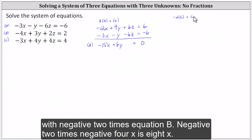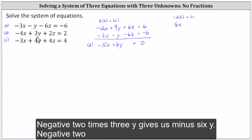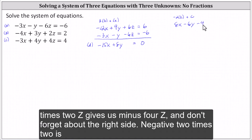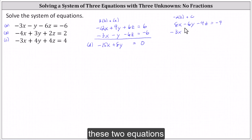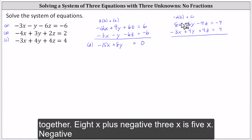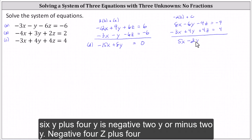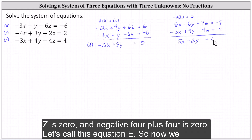So let's start with negative two times equation B: negative two times negative four X is eight X; negative two times three Y gives us minus six Y; negative two times two Z gives us minus four Z; and don't forget the right side — negative two times two is negative four. Equation C remains the same. Now we add these two equations together: eight X plus negative three X is five X; negative six Y plus four Y is negative two Y; negative four Z plus four Z is zero, and negative four plus four is zero. Let's call this equation E.